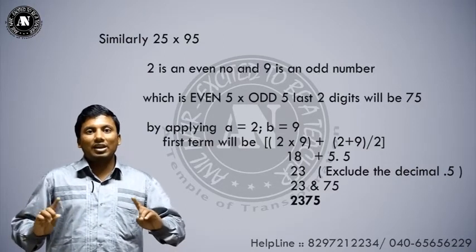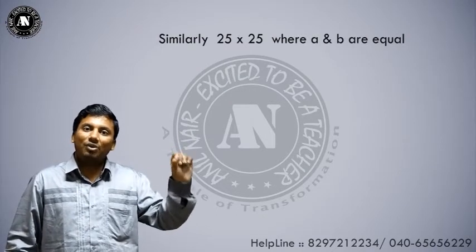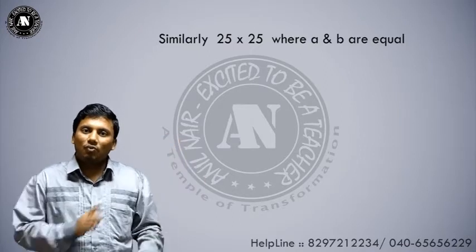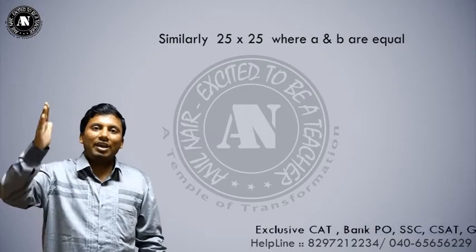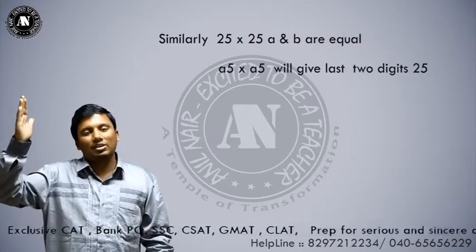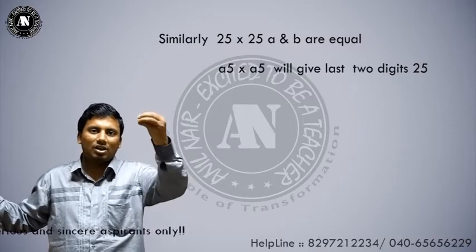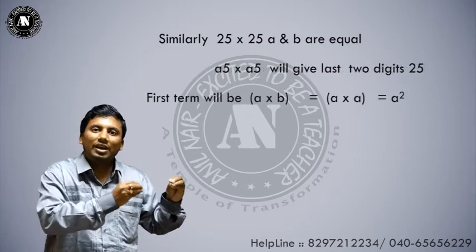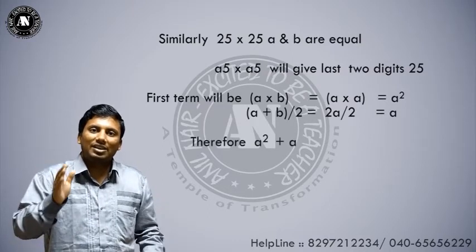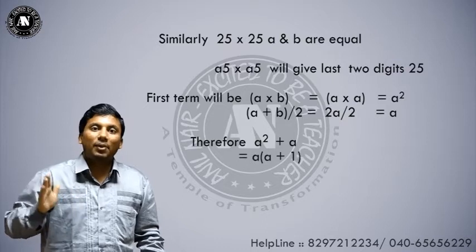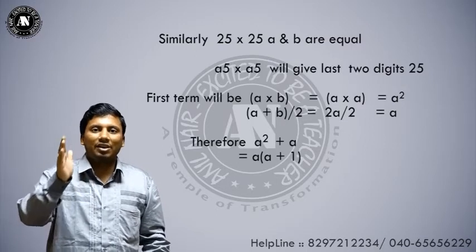It is generally said in school that for 25 squared: 5 fives are 25, add 1 to the tens digit, 2+1=3, so 3 twos are 6, giving 625. Why does that 1 come in? Because if you make a and b equal — a5 into a5 — the formula gives a² + a, which is a×(a+1). Whether a is even or odd, last two digits are always 25. I hope you have understood why we add 1 when finding the square of a number ending with 5.